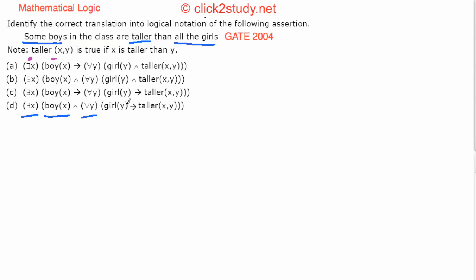Then you have to say that this boy is taller than all the girls. That's why you see 'for all values of Y' and 'girl(Y).' For all values of Y, if it is a girl, then the boy should be taller than the girl. So you can definitely get that there must be an implication: 'for all Y, girl(Y) implies taller(X, Y).'